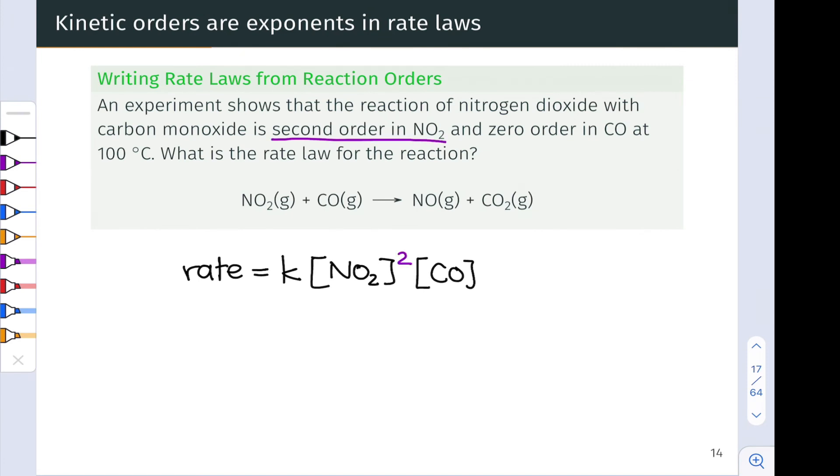So to start, let's notice that the question statement mentions that the reaction is second order in NO2. This means that we can add the exponent 2 to the NO2 concentration term straight away. The problem statement also says that the reaction is zero order in CO, and this means that we can add the exponent 0 to the concentration of CO term here.